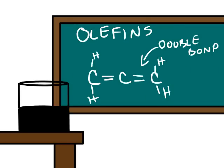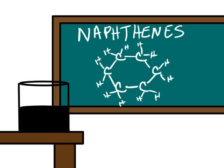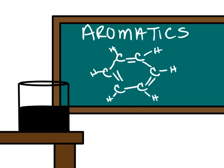There are also molecules in the shape of rings. Single bonded rings are referred to as naphthenes. Rings with double bonds are referred to as aromatics.